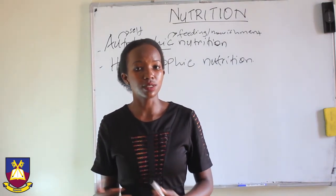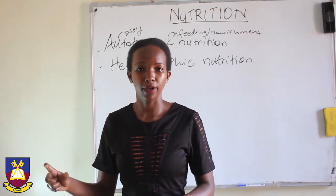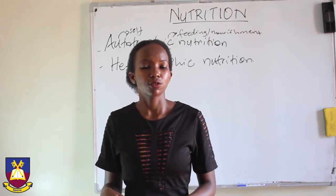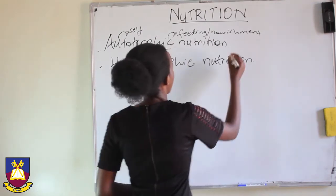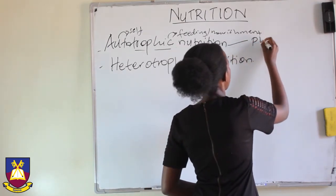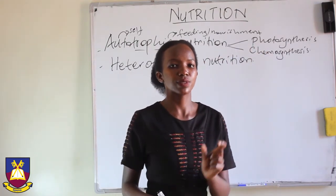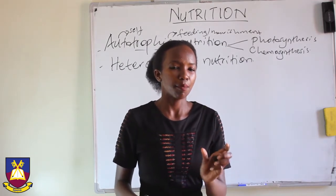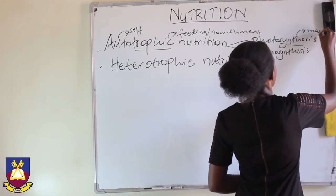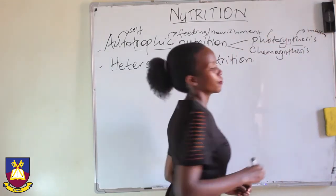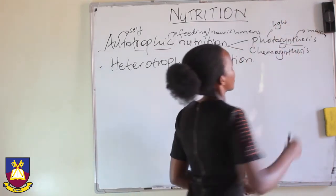These materials sometimes differ from one autotrophic organism to another. Now, there are two major categories of autotrophic nutrition: photosynthesis and chemosynthesis. 'Synthesis' comes from synthesizing, which means making, and 'photo' stands for light.